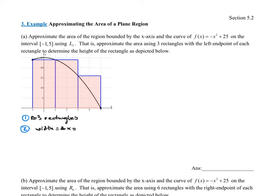Don't worry about the notation — just know delta x means the width. It's always the right endpoint minus the left endpoint divided by the number of rectangles. In this case, the right endpoint is 5, the left endpoint is negative 1, and the number of rectangles is 3. So 5 minus negative 1 is 6, divided by 3 is 2. The width of each rectangle is going to be 2.